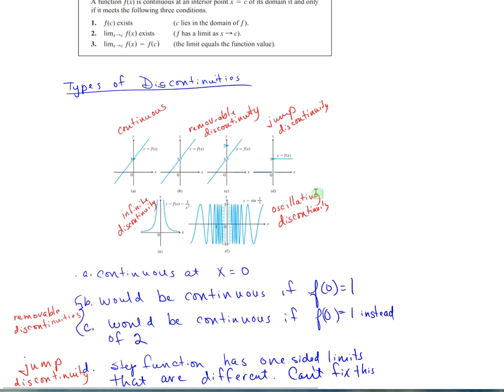Types of discontinuities. We have this straight line, filled in circle, totally continuous. This one is straight line, open circle, removable discontinuity. That is removed if we have f of 0 equaling 2. So we can remove that.